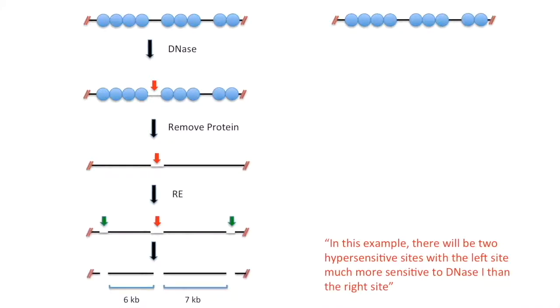After we treat with restriction enzymes, we are left with a 6 kb and 7 kb fragment. However, as time goes on, DNase will also be able to cut the other hypersensitive site, which is less sensitive than the original site. This is shown on the right.